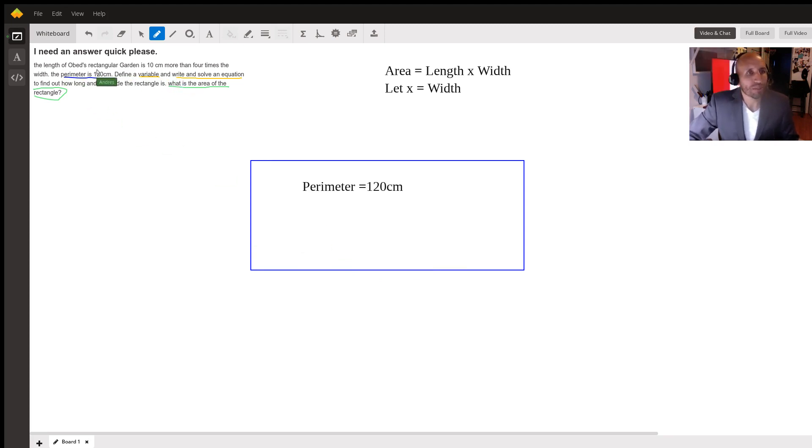Now it tells me that the length of the rectangle, so this part up here, is going to be 10 centimeters more than four times the width. So let's let x equal the width. So this is the width of your rectangle, so we're going to let this side equal the actual width. We'll let the width equal x right here.